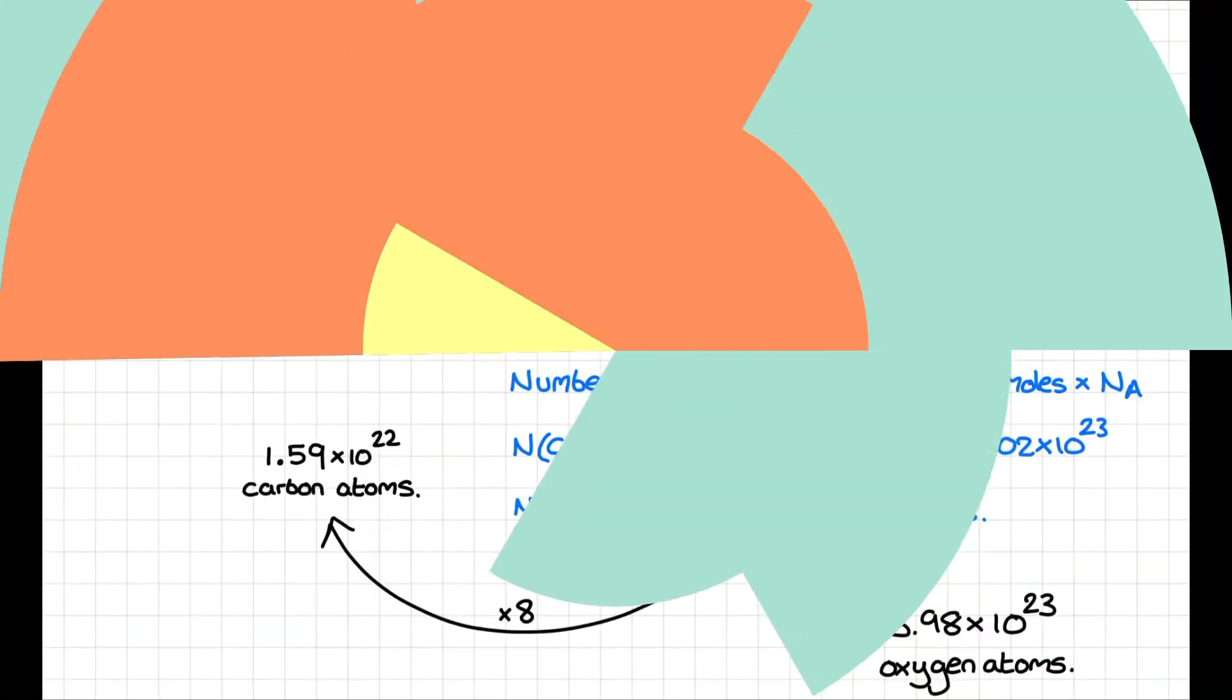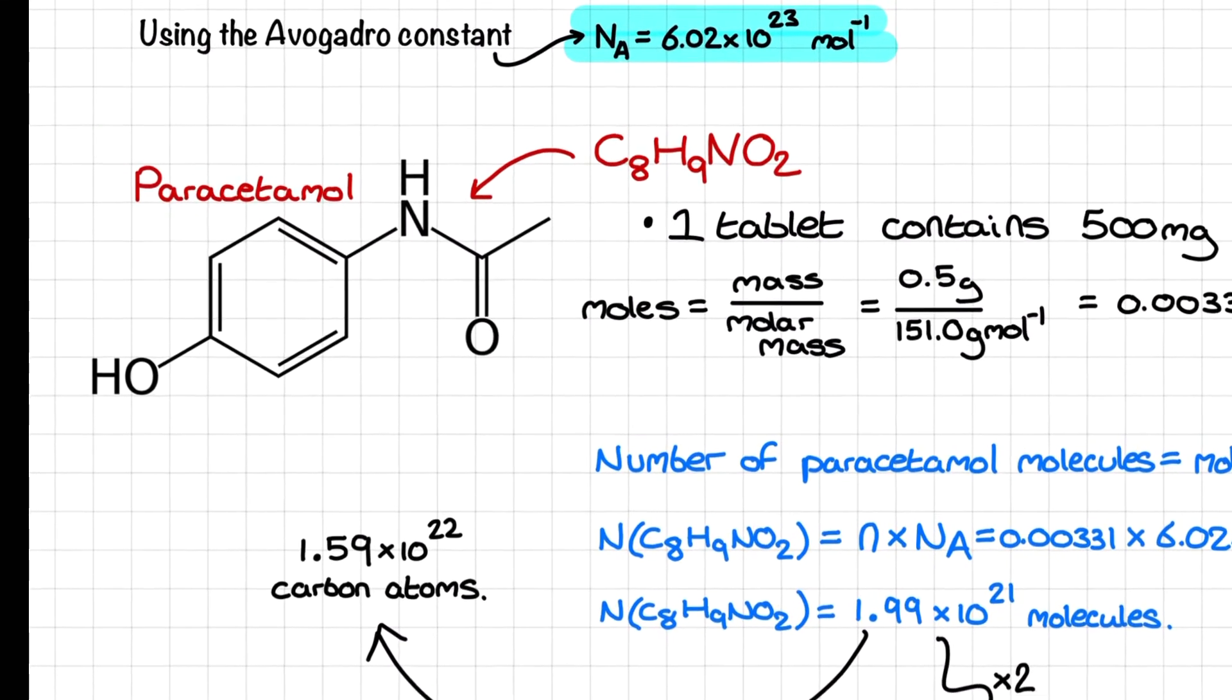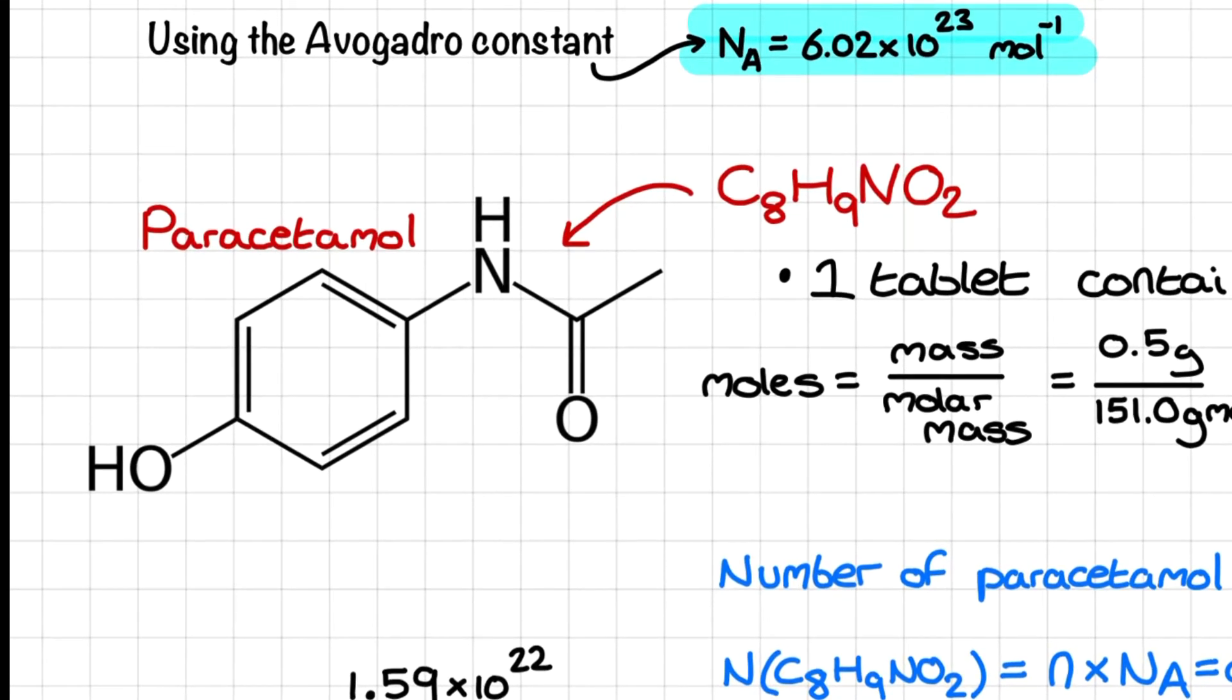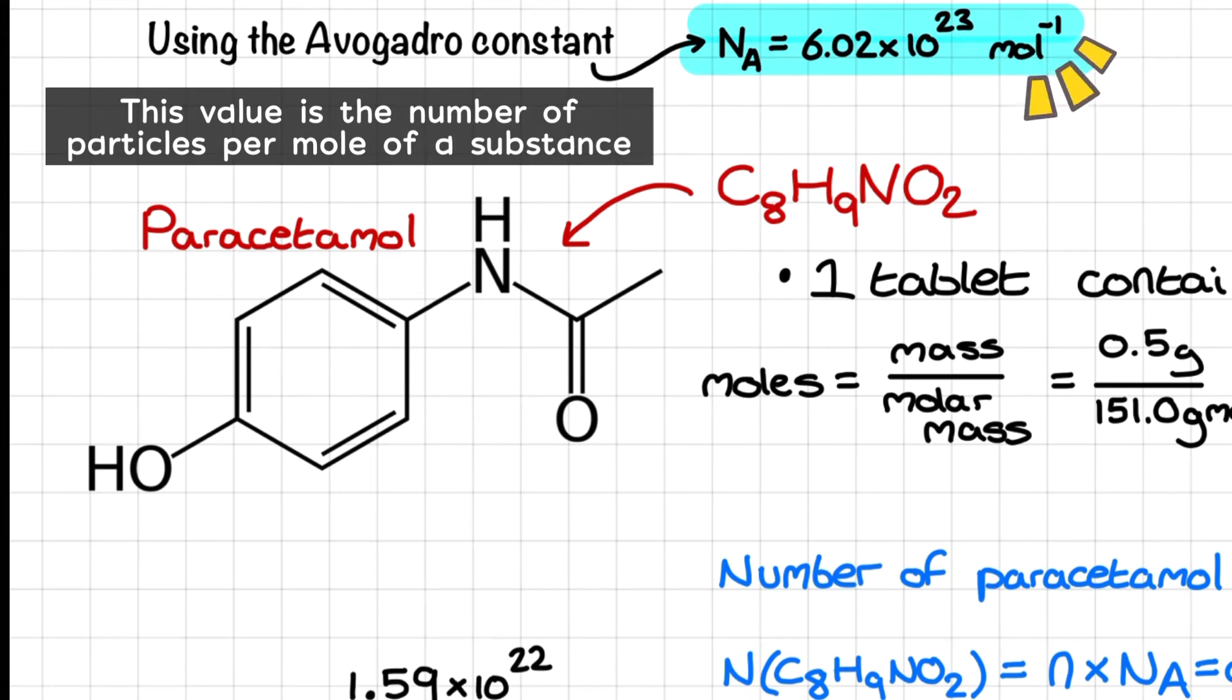Hi everyone, and welcome back for a short tutorial about how we can use the Avogadro constant to determine the number of molecules, atoms, protons, etc. in a sample of a substance. The Avogadro constant is on your datasheet and it represents the number of particles per mole of a substance.